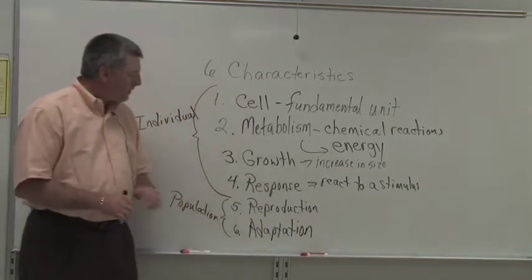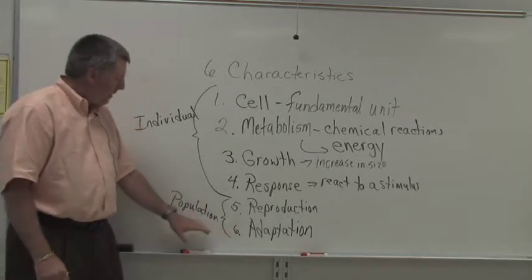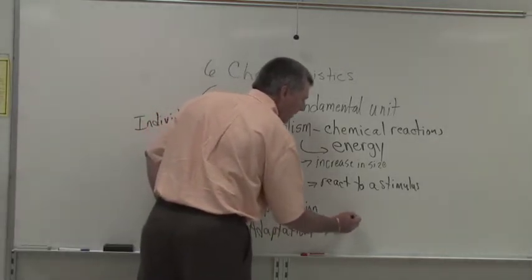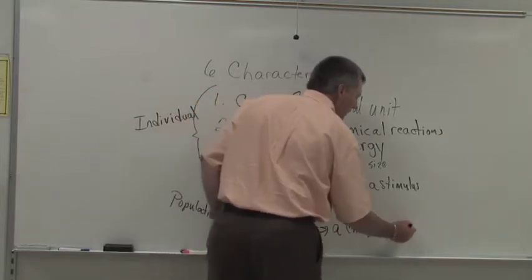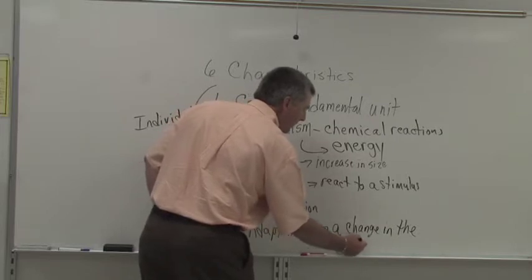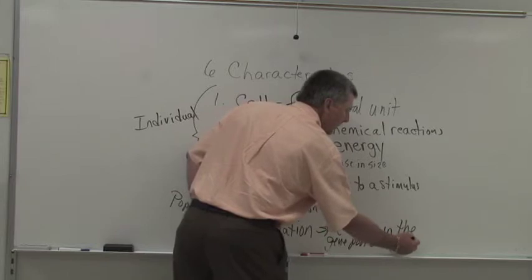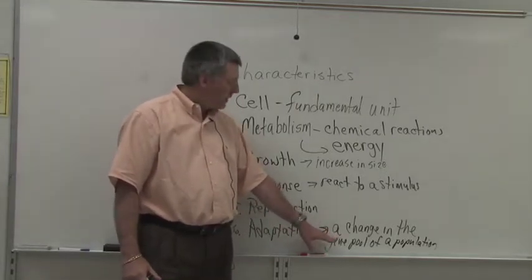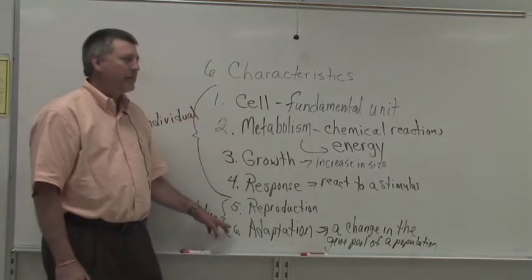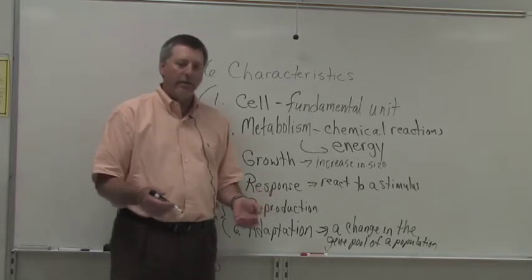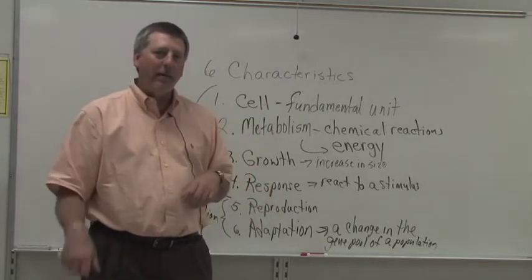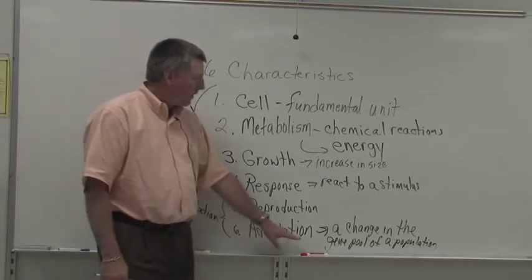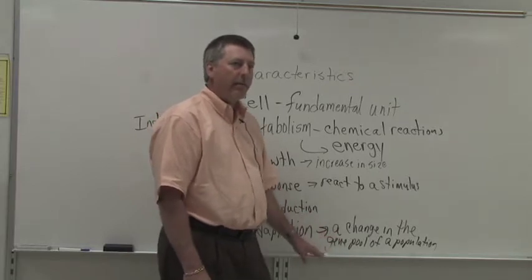The sixth characteristic of life is the idea of adaptation. Adaptation, by definition, takes place on the population level. Adaptation could be defined as a change in the gene pool of a population. Individuals cannot adapt because individuals don't change their own genes — but individuals can acclimate. For example, football players going to Mile High Stadium a week early aren't adapting; they're acclimating. But populations adapt, and that's when there's a change in the genetic makeup of that population over time.